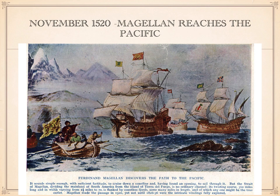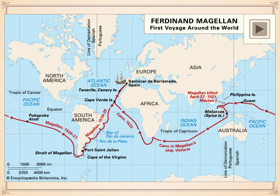They named the ocean the Pacific because of its peaceful waters. Magellan had expected it to take three to four days to reach Asia once around the tip of South America, but it actually took nearly four months. The men were starving and thirsty, and along the way about 30 of them died — mainly from scurvy. In March of 1521 they reached the island of Guam and then sailed on to the Philippines.